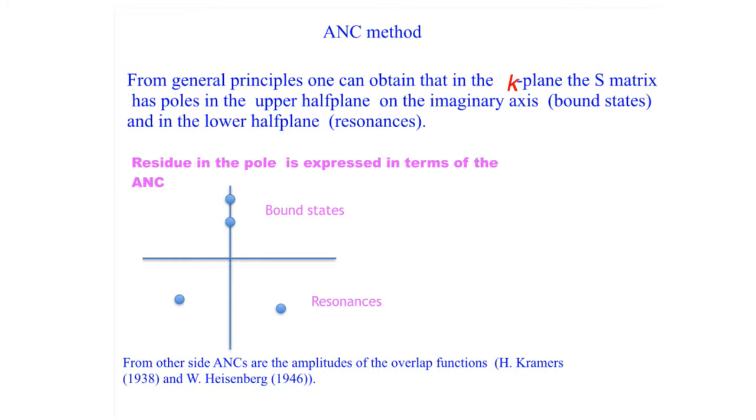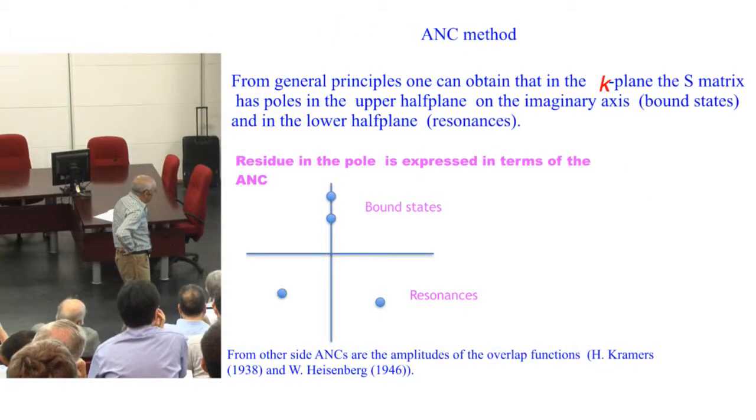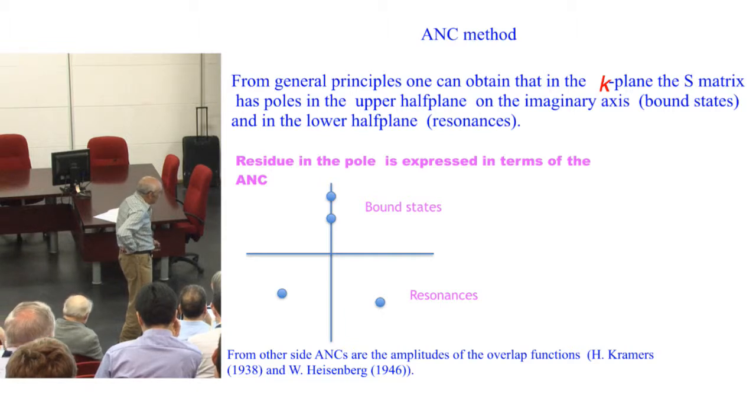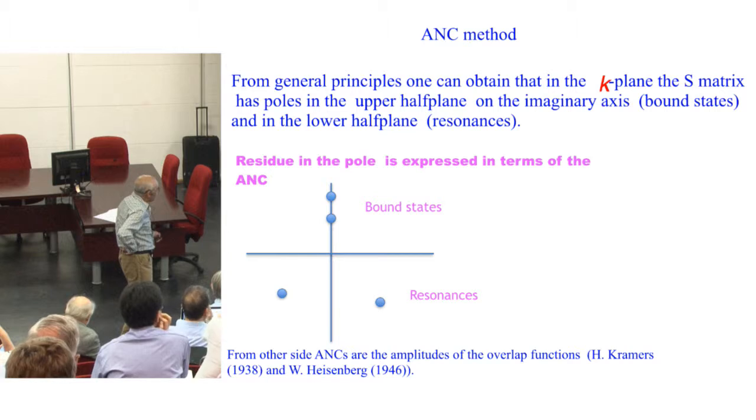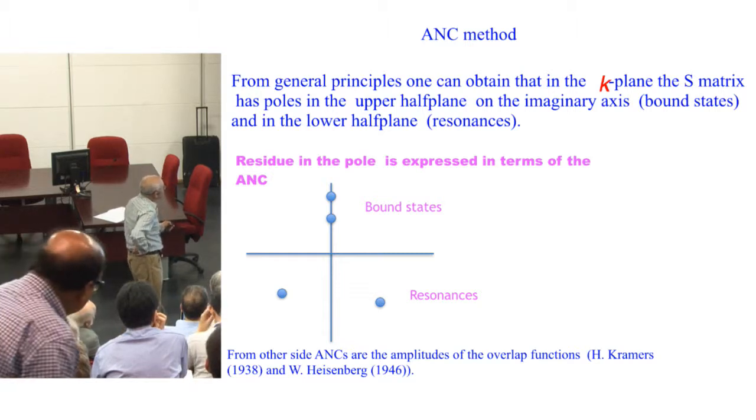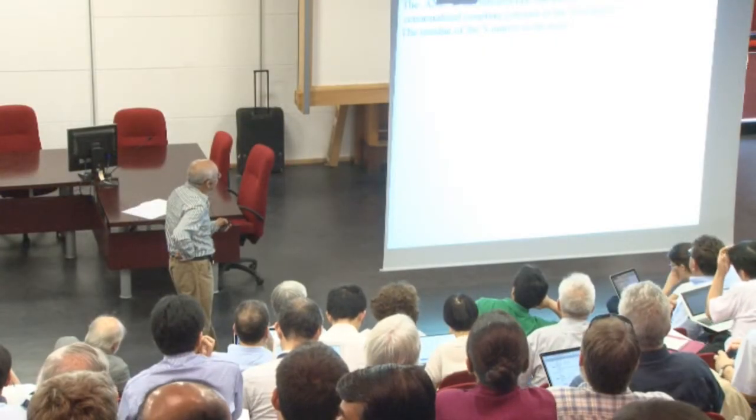From general principles, one can obtain that in the K plane, the S-matrix has poles corresponding to bound states and resonances. The residues of these poles are expressed in terms of the ANC. From another side, this is a pure axiomatic approach. But ANCs are also the amplitudes of the overlap functions discovered by Kramers in 1938 and Heisenberg in 1946. They connected the wave function description and asymptotic behavior of the bound state wave function with the residue of the poles. The ANC, or Asymptotic Normalization Coefficient, is a fundamental nuclear characteristic equivalent to the renormalized coupling constant in field theory.